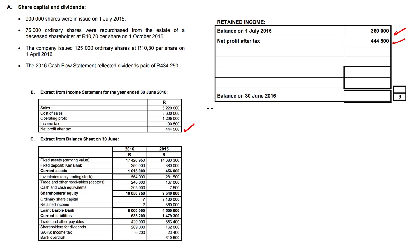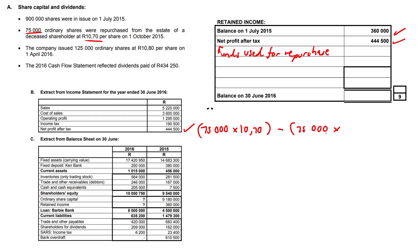Next is going to be the funds used for the repurchase of shares. Remember in the last video we said that this is the difference between the total — so the $75,000 times $10.70 and the $75,000 times the average share price which was $10.20. The difference we plug into our retained income, which if you plug into your calculator you get $37,500. The total amount goes into your cash flow statement.